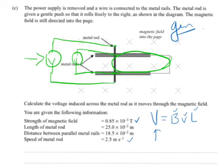The question says calculate the voltage induced across the metal rod as it moves through the magnetic field. So the voltage across the metal rod would indicate to me that you are trying to find this one here.